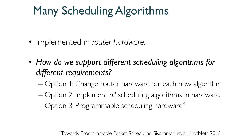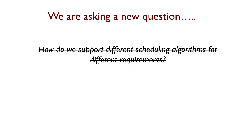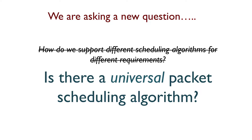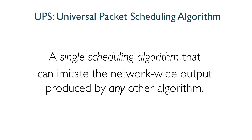What is driving all of this is the underlying assumption that we need different scheduling algorithms for different requirements. With our work, we instead ask a different question: do we really need different scheduling algorithms for different requirements? Or can we instead have a Universal Packet Scheduling algorithm — what we call UPS — a single scheduling algorithm that can imitate the network-wide output produced by any other algorithm?